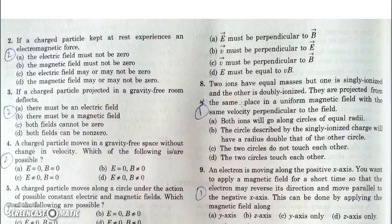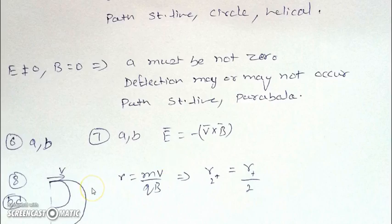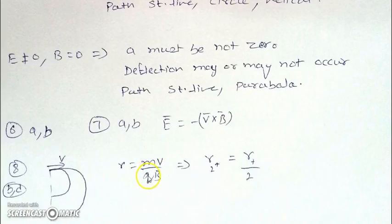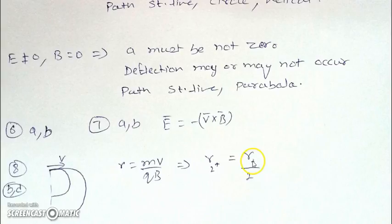The next part: there are two ions having equal masses, but one is singly charged and another is doubly charged. They are projected with the same velocity under the same field. As the radius depends on their charge, and all other parameters — m, v, and B — are the same for both, the doubly positive charged ion will have a smaller radius which is half of the radius of the singly charged ion. Both paths will touch each other because they are thrown from the same point, with the smaller radius for the doubly charged ion and the bigger radius for the singly charged ion.